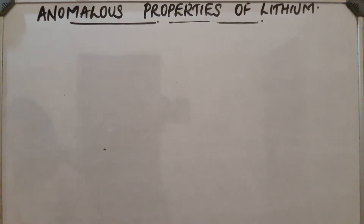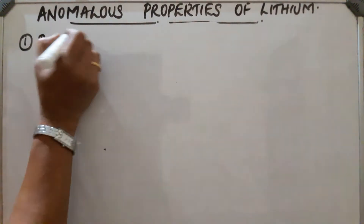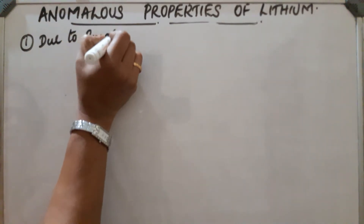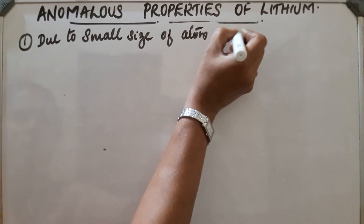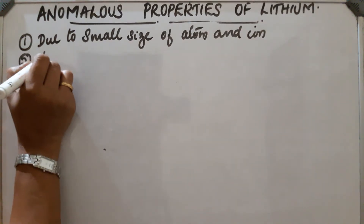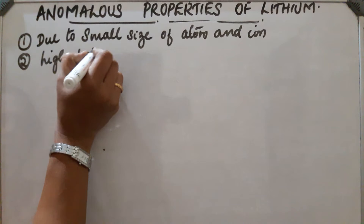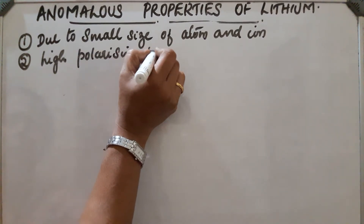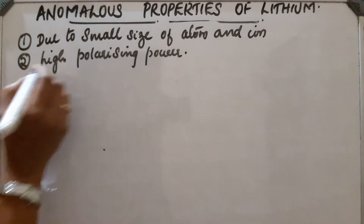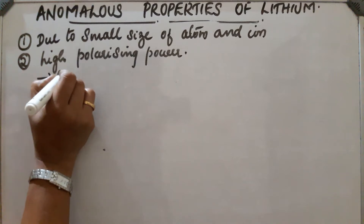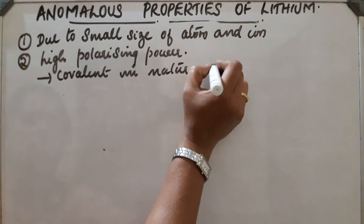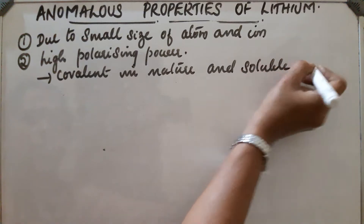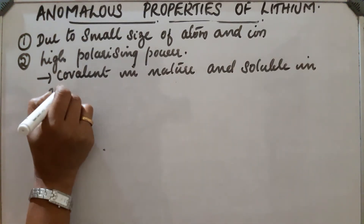Lithium varies much from other alkali metals due to two reasons: first, the small size of its atom and ion, and second, its high polarizing power. Due to these reasons, lithium compounds are covalent in nature and are soluble in organic solvents.